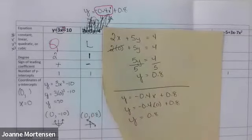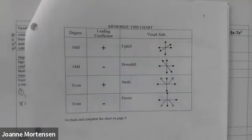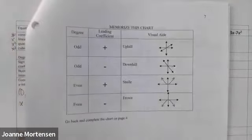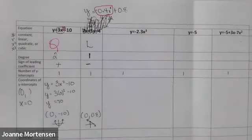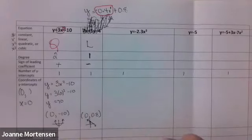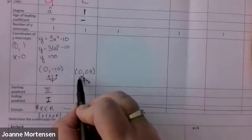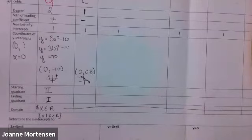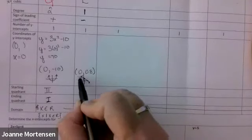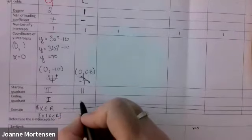From the chart: x to the one — the degree is odd, and it's negative, so it's a downhill line. That means it starts in quadrant two and ends in quadrant four. So the quadrants are two and four.